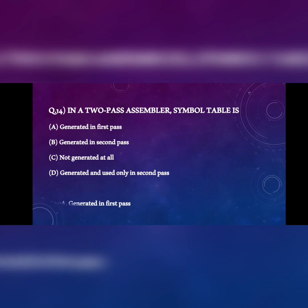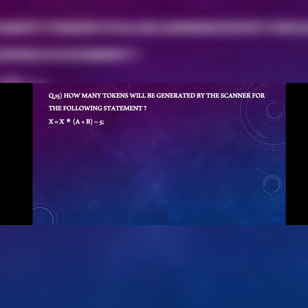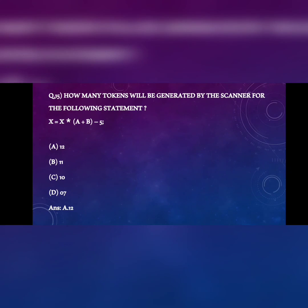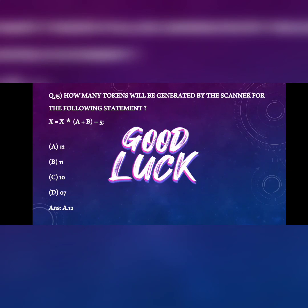Last question: how many tokens will be generated by the scanner for the statement: x = x * (a + b - 5); ? Options are 12, 11, 10, or 7. Counting each symbol — x, =, x, *, (, a, +, b, ), -, 5, ; — gives 12 tokens. The answer is 12. Thank you.